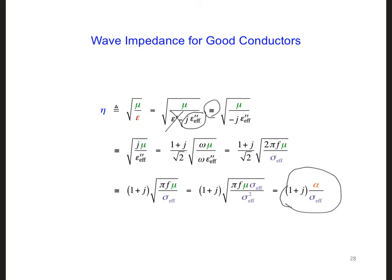And if you draw this in the complex plane, the real part is equal to the imaginary part. So we get a vector at an angle of 45 degrees to the real axis. So this is real, this is imaginary. And this means that in the aluminum and actually in all good conductors, the electric and the magnetic fields are propagating 45 degrees out of phase with each other. And that's because eta has an angle of 45 degrees.